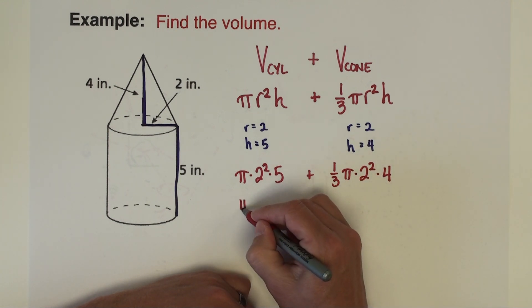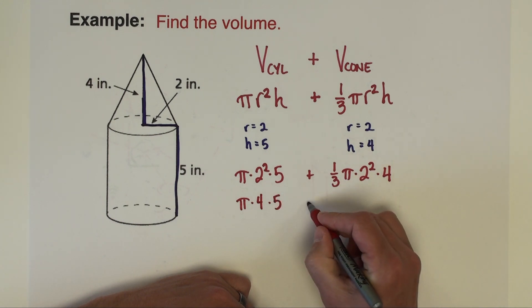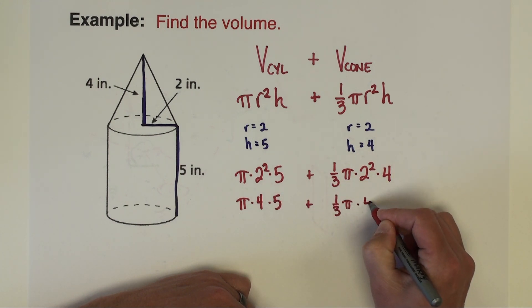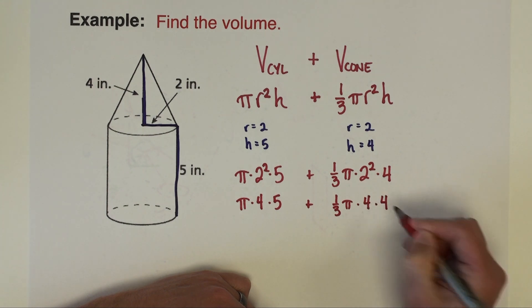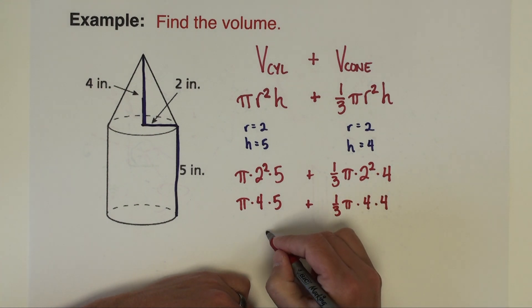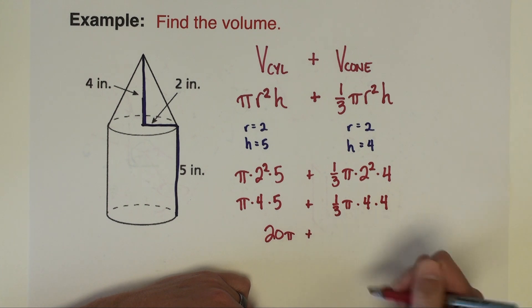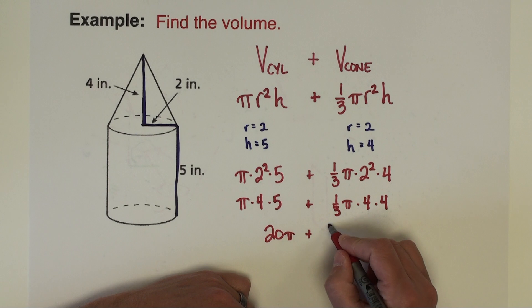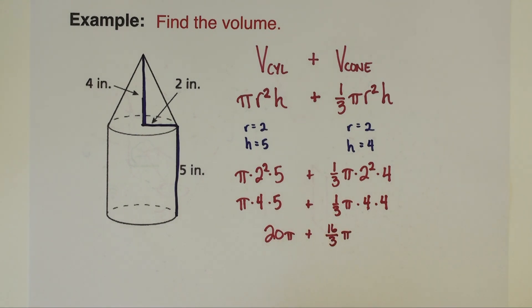So here we've got pi times 4 times 5 plus one-third pi times 4 times 4. So we're going to have 20 pi plus, and then 4 and 4 is 16, which doesn't divide by 3, so we're just going to have 16 thirds pi.